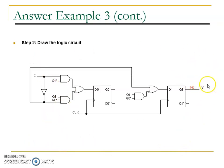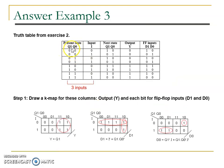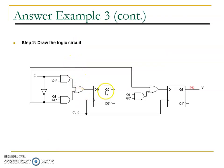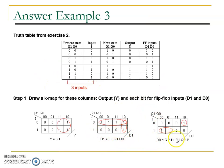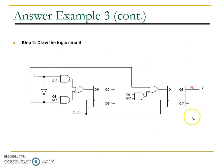So this is the circuit. Y equals Q1, so Q1 connects directly to Y. We have two flip-flops because this is a 2-bit design. The first flip-flop receiving the clock is the LSB flip-flop named D0, and the other is the MSB flip-flop named D1. Draw the logic circuit that reflects these equations to complete the circuit. This is the answer for Example 3.